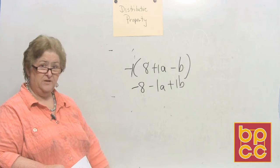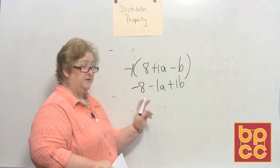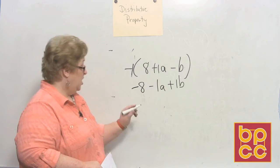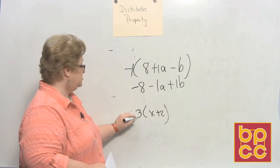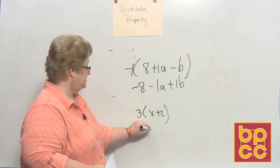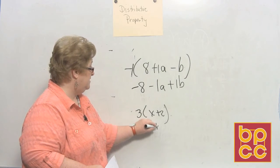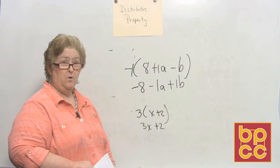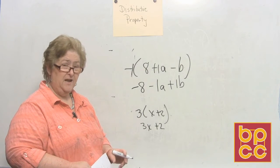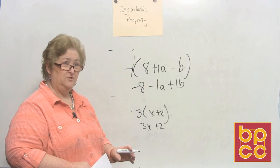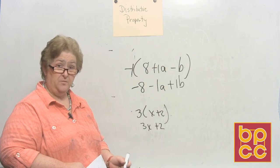A common mistake that people make is that they're either not looking at their signs, or on something easy like this, they'll multiply the first one and get 3x, and then they'll forget and just write plus 2, or they won't watch the sign. Remember, you've got to watch your signs on the numbers that you're multiplying, and always multiply the first times the first, the first times the second, the first times the third, until you finish with all the numbers in the parentheses.